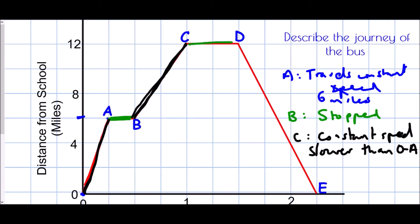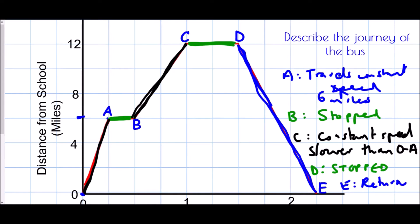Between C and D, the line is not steep at all — it actually has a gradient of zero, because they have stopped again. So because it is a flat line, they have stopped. And then finally, we get D to E. A common mistake here is to say the bus is slowing down because the line is going downwards. But that is not what a negative gradient suggests in this situation. In a distance-time graph, a negative line just means we've returned home — or in this case, returned to school.